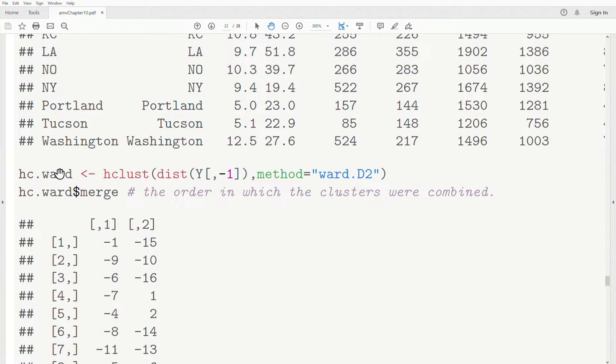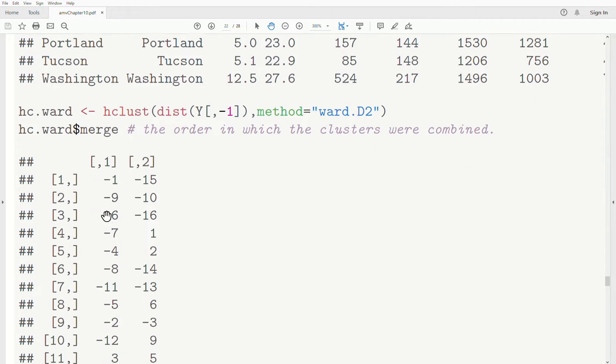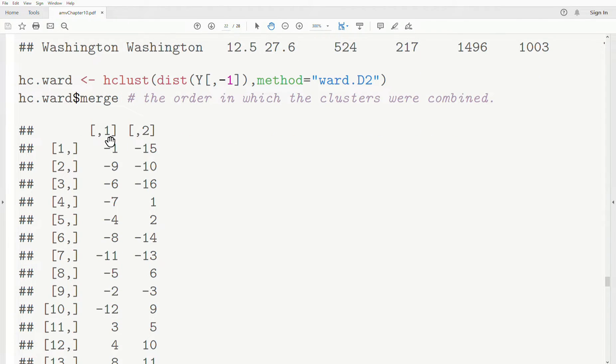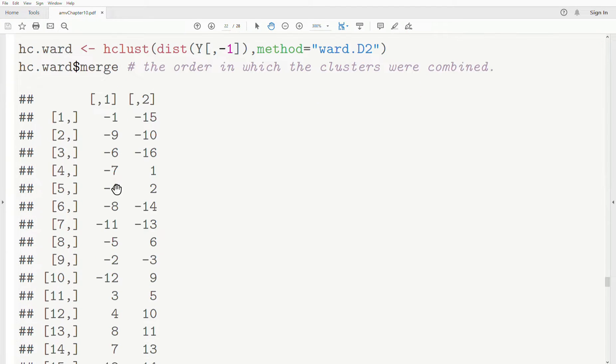HC is hierarchical clustering. Ward is the method we use. Now part of that information is what's called a merge matrix. It tells us the order at which clusters are combined. A negative value means it's an observation. A positive value means it's a cluster.